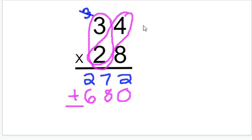So now that I have these two numbers I'm going to add them together. 2 plus 0 is 2. 7 plus 8 is 15. Carry the 1. 6 plus 2 is 8 plus 1 is 9. So my whole answer is 952.